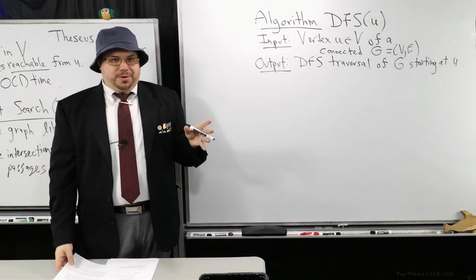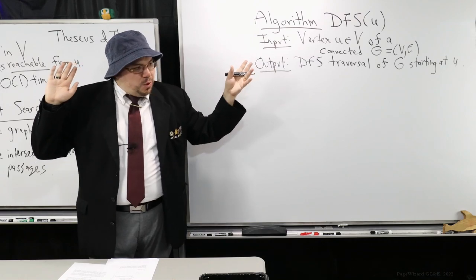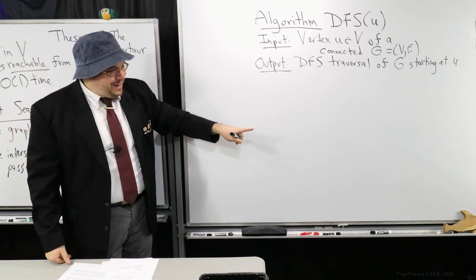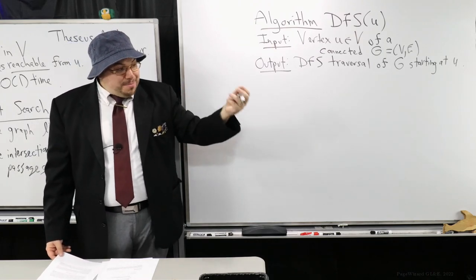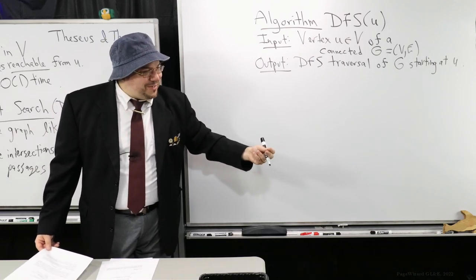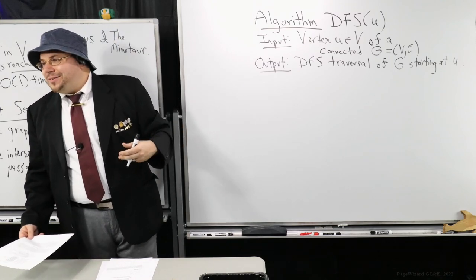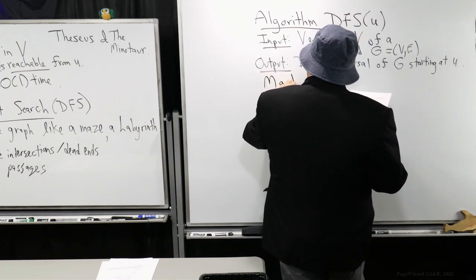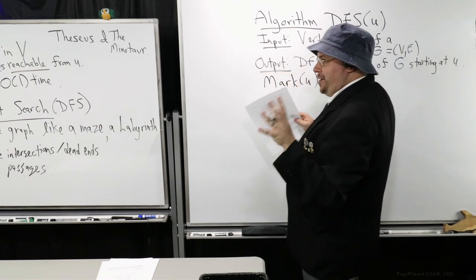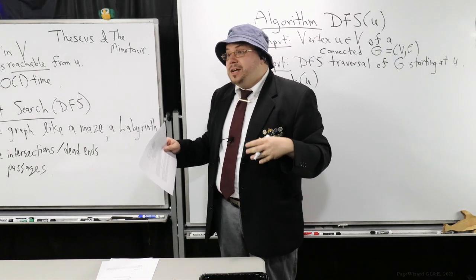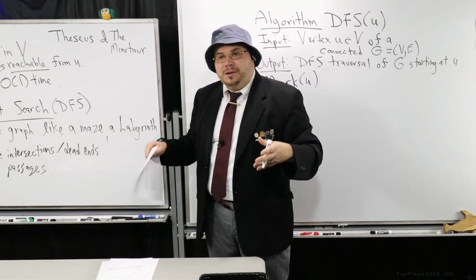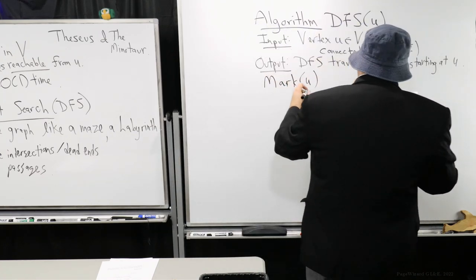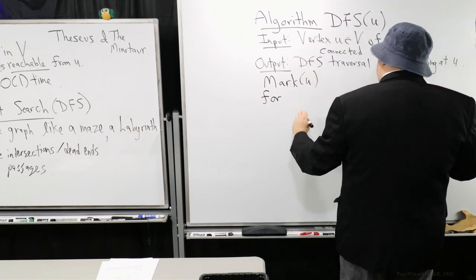Let's walk through the mindset we had earlier. We have a starting vertex. Every single time we arrived at a vertex, we would mark it and then examine all incident edges. If we found an incident edge where the opposing endpoint was not marked, we continued our search along. Otherwise, we would label that edge as a back edge.